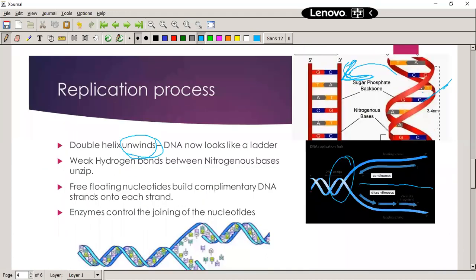Okay, so the double helix, there's the double helix. It unwinds to form a ladder, so it becomes a ladder. And then the weak hydrogen bonds between the nitrogen bases, they unzip. There we go, unzips over here. So there's an unzipping over there, so they separate. And there we can see the separation, you can see this, they become separate.